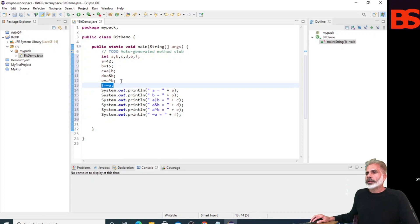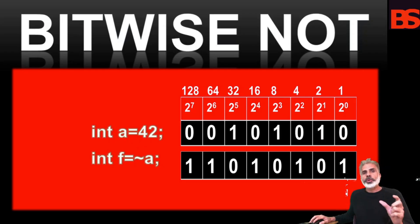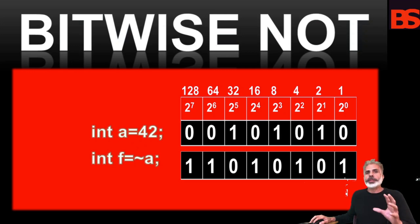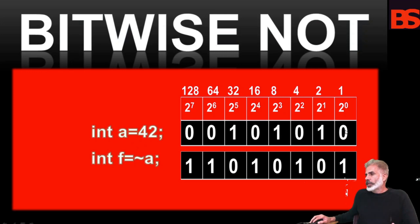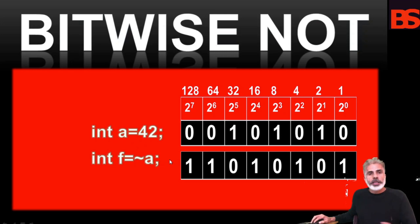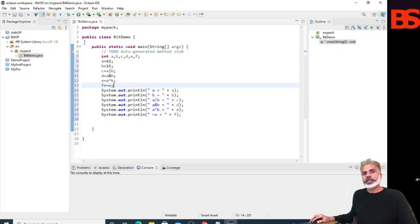Here we apply the bitwise NOT operator, also called the bitwise complement. The unary NOT operator inverts all of the bits of its operand: 0 becomes 1, 1 becomes 0. It inverts all bits and the result is assigned to F. Let's run this program and see the output.